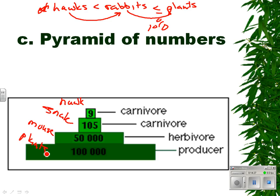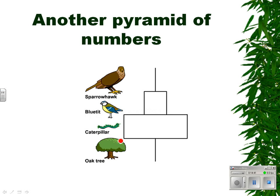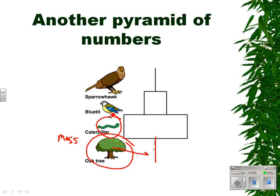It takes way more energy to feed a carnivore than it does to feed an herbivore. Every once in a while you get a pyramid that looks inverted — because an oak tree is so big by mass, but by numbers there's only one. One oak tree can feed an enormous number of caterpillars, which can feed quite a few small birds, which can feed a sparrow hawk.